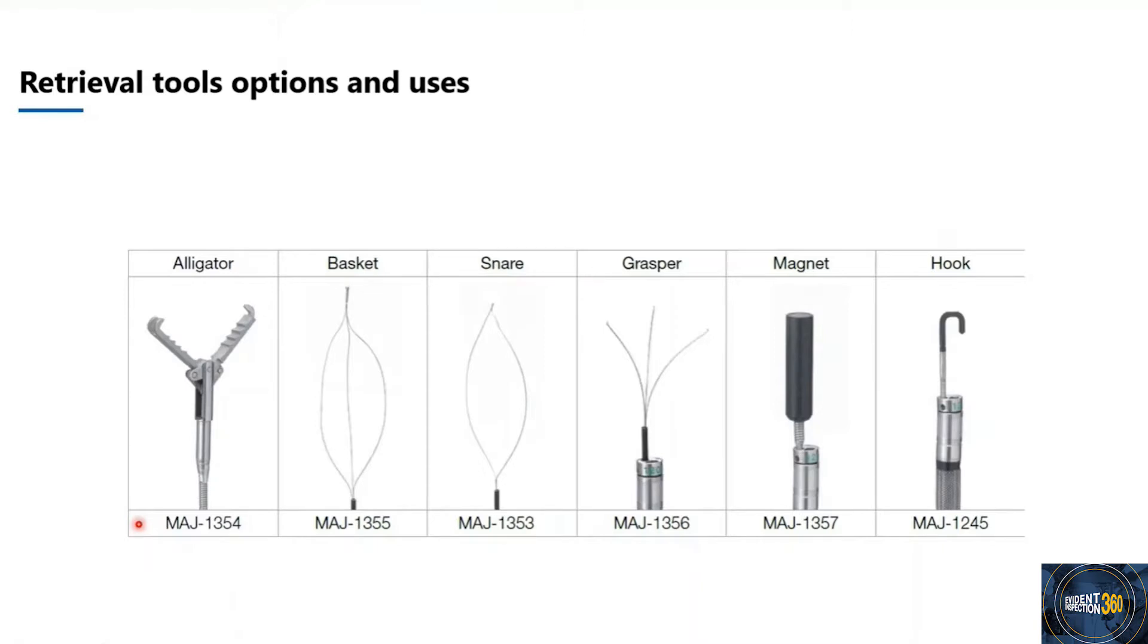For the basket or snare and grasper, it just gives you different angles and directions of grabbing FOD. The magnet is if you want to collect magnetic material, for example.